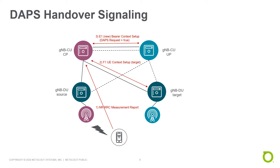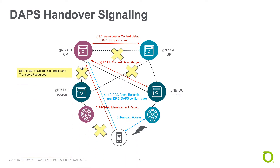After these two contexts have been established, the CU-CP sends the New Radio RRC connection reconfiguration — the handover command — to the mobile. For every dedicated radio bearer, it is defined whether a DAPS configuration is required. After the mobile receives this handover command, the downlink data transmission from the target side starts. The random access procedure is then performed, and when it is successfully completed, the transport and radio resources related to the source cell can be deleted and the DAPS handover is successfully completed.